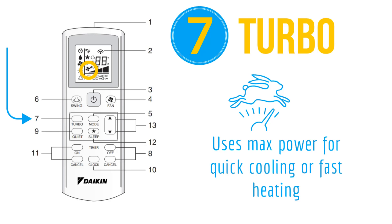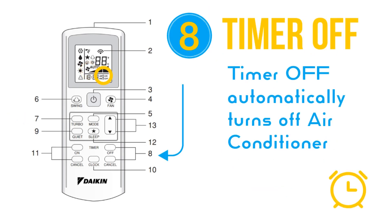Use the off timer to automatically turn off the Daikin AC after a certain amount of time. To activate timer off, press the off button. To set the off time, press the off button continuously to increase the time. Press the cancel button to cancel the off timer. "OFF" will display on the Daikin remote screen when the off timer is active.